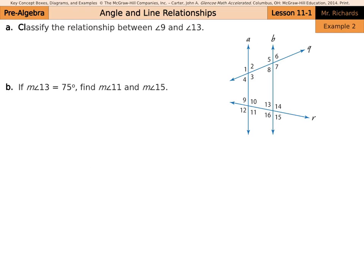Next, classify the relationship between angles 9 and 13. Looking at the diagram with two parallel lines cut by a transversal, alternate interior angles would require both angles inside the parallel lines — we don't have that. Alternate exterior would require both outside — we don't have that either. Since they're both in the top-left position of their respective angle sets, angles 9 and 13 are corresponding angles.